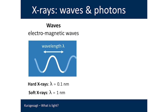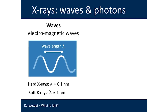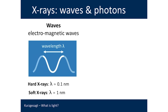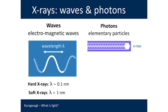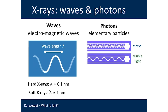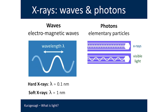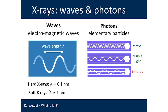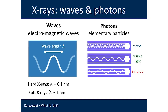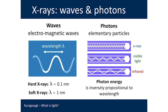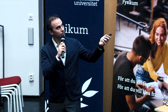X-rays are also waves, as many of you correctly guessed — electromagnetic waves with a certain wavelength, which is the distance between two neighboring peaks. We often distinguish between hard X-rays, approximately 0.1 nanometers, and soft X-rays, about 1 nanometer. X-rays are also particles — photons, elementary particles. Depending on the type of light, it has a different photon energy. X-rays have very high photon energy compared to visible light or infrared. There is a connection: photon energy is inversely proportional to wavelength, so higher photon energy means shorter wavelength.